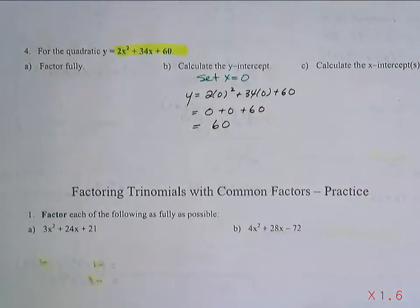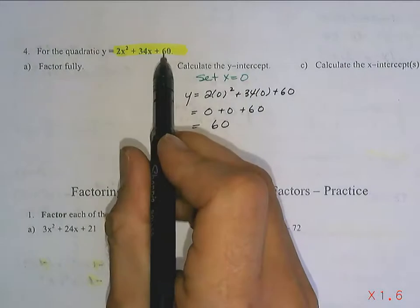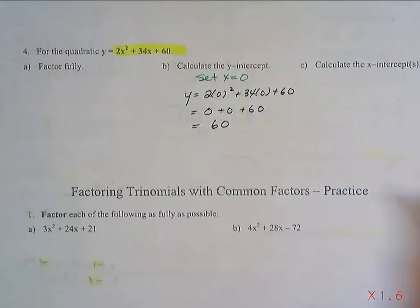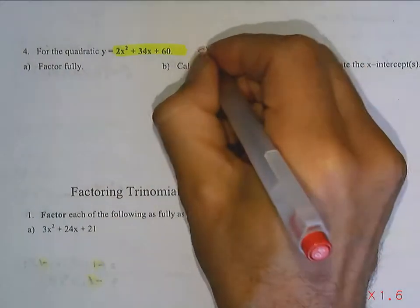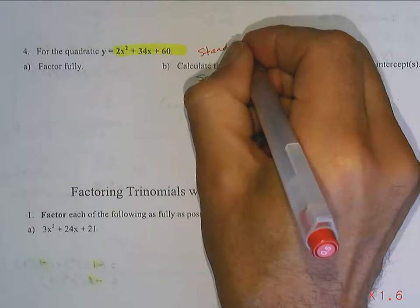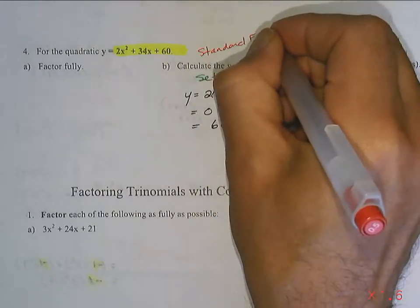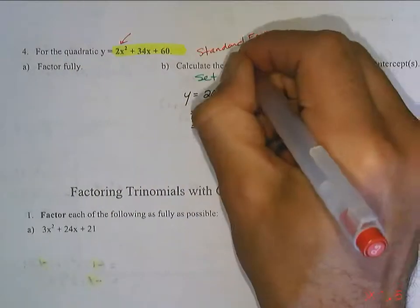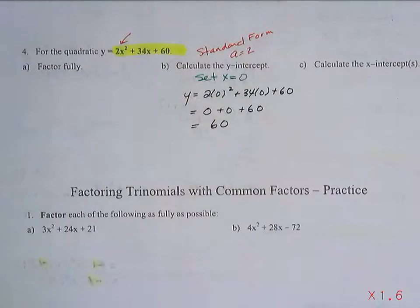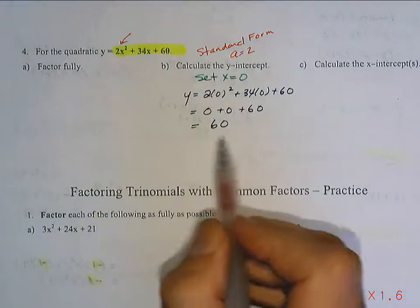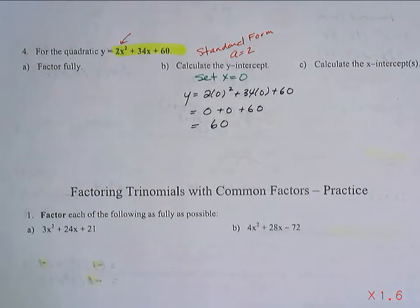Not so hard. And again, I could have read it right from the standard form. This is still standard form. The only difference is your a value is 2, which means it opens up and it has a step pattern of over 1 up to x squared. There's a vertical stretch here. It didn't change your y-intercept. It is still 60.